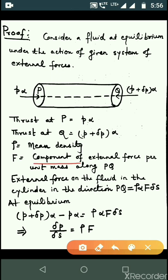F is the component of external force per unit mass. The cylinder has total mass which is the volume alpha delta S multiplied by rho.